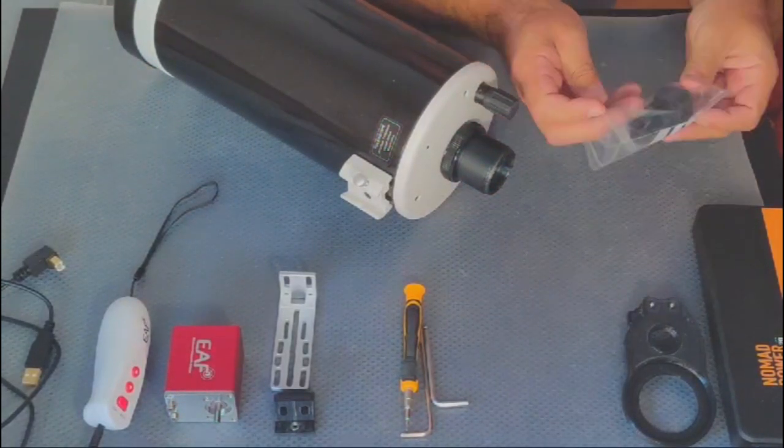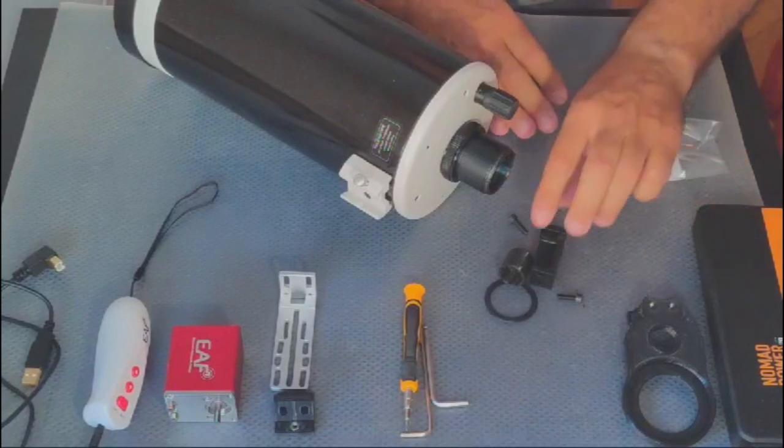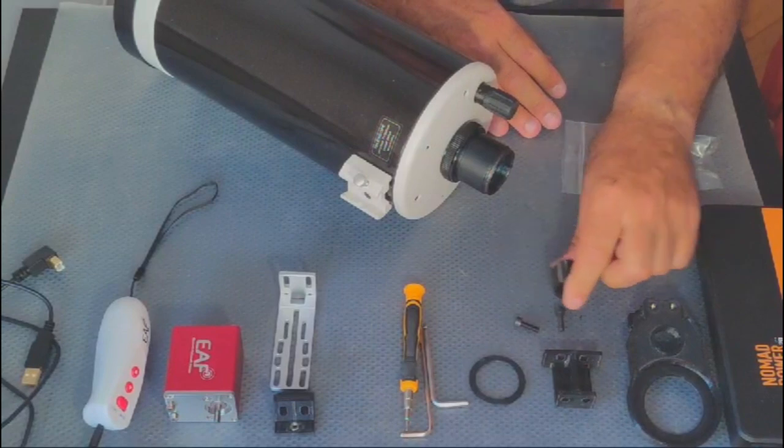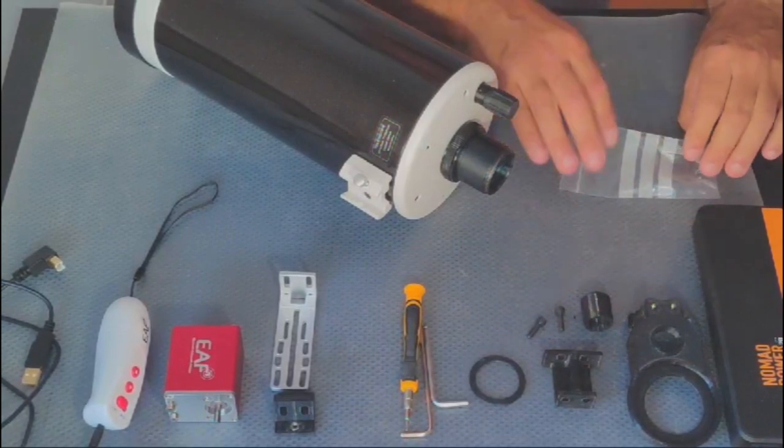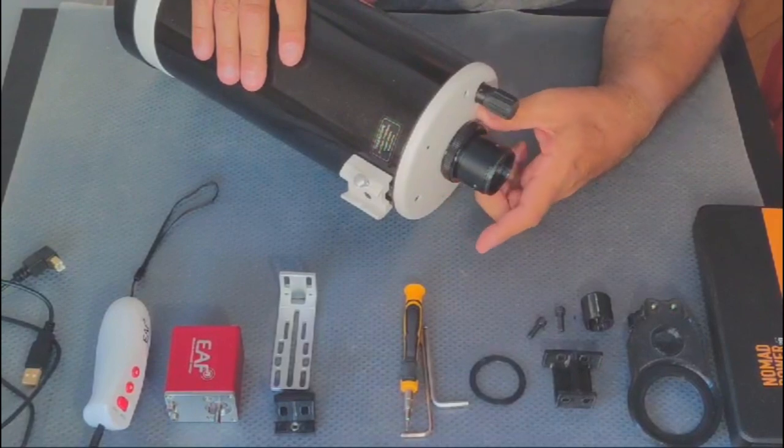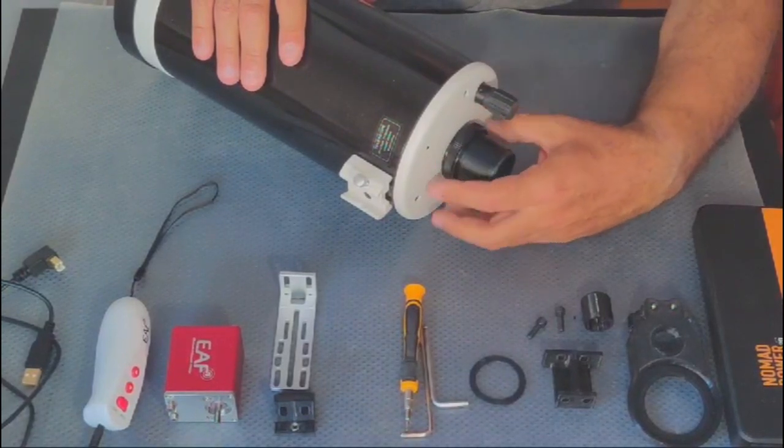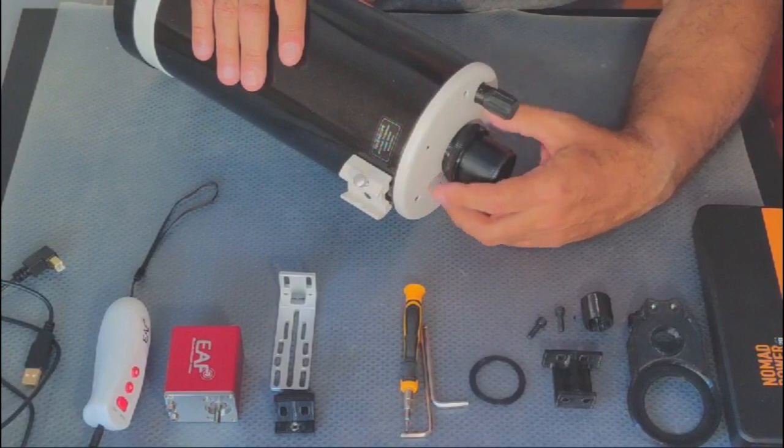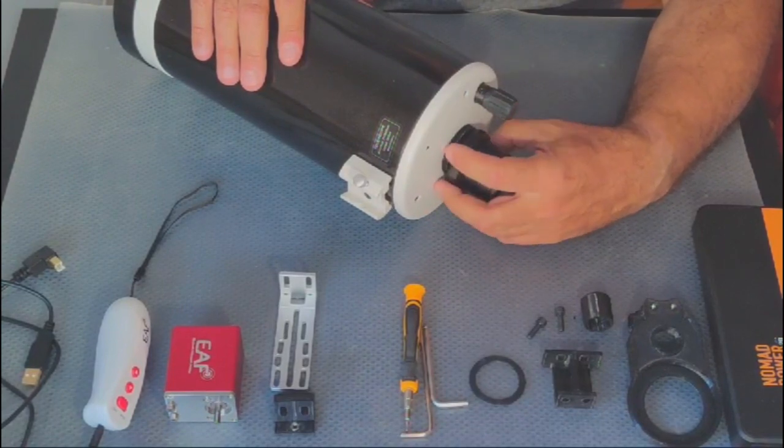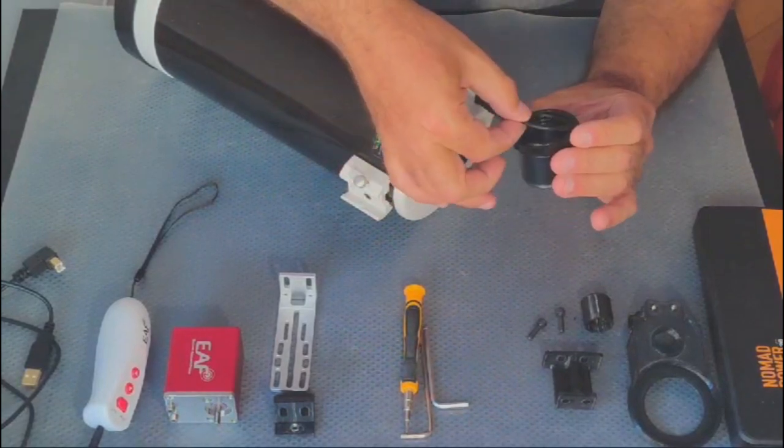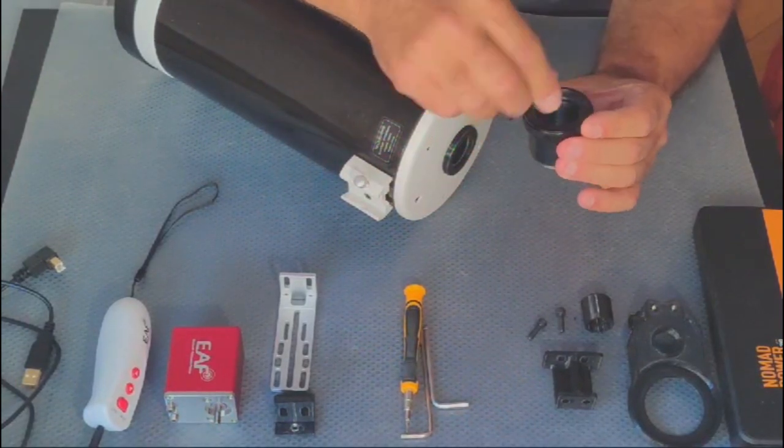We will start by the insertion of the washer in the visual back female thread. If you are using an SCT 2-inch visual back adapter, ignore this step. You may need to sand the washer in thickness so the bracket hole gets locked without any play, while at the same time, the visual back is also firmly in place.